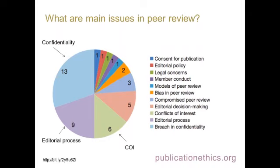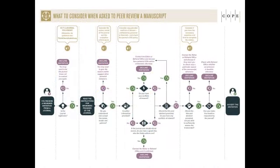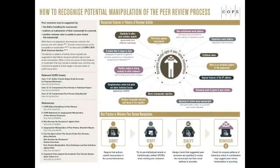This research was presented as a poster at the peer review congress earlier this week. The Education Subcommittee has been working on new COPE guidance for emerging issues. This includes an infographic on what to consider when asked to peer review a manuscript — encouraging transparency at that early stage to head off problems later. Key considerations are: Is it a journal you know? Is it a model of peer review you're comfortable with? Do you have any conflicts of interest? Do you have the necessary expertise and time to do the peer review? Recognizing potential manipulation of peer review processes is also a growing topical issue.